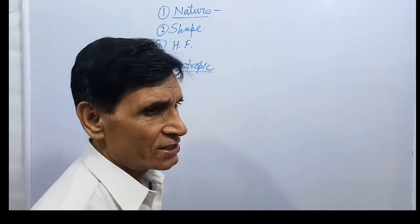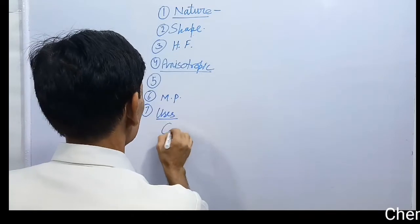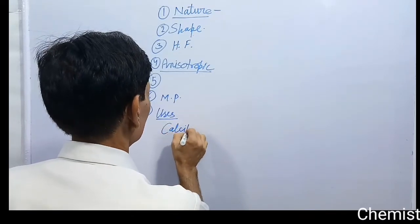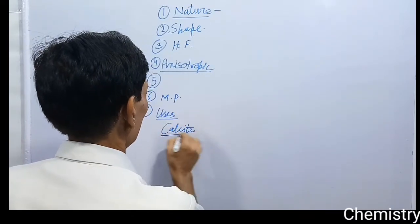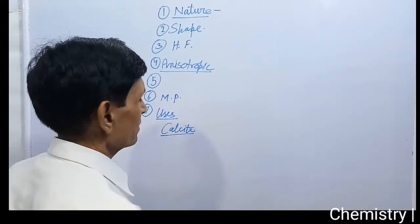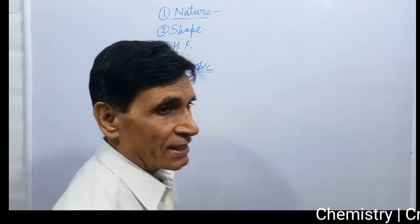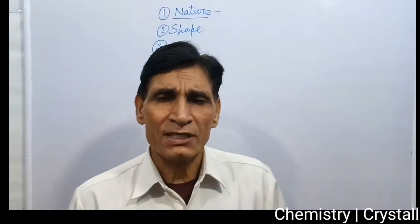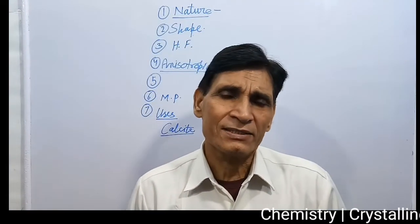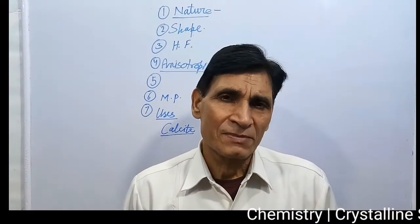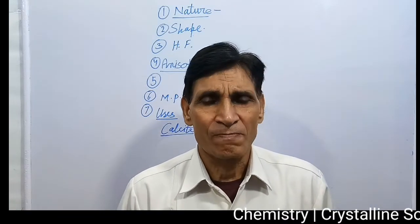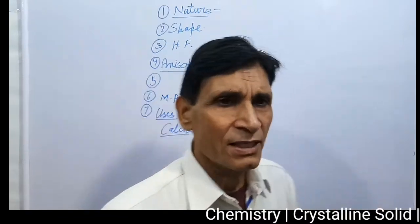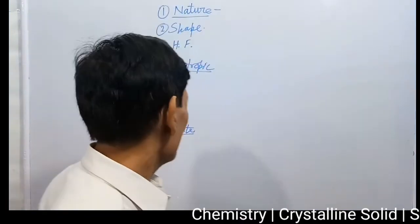Now let me tell you some uses. Crystalline solids like calcite — remember this important example — calcite is used for making optical instruments like prisms. These solids are very useful in such applications.